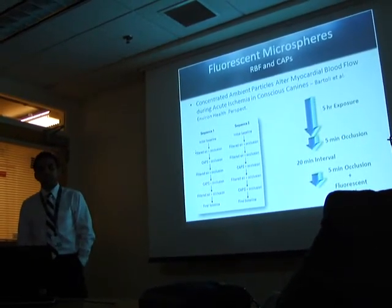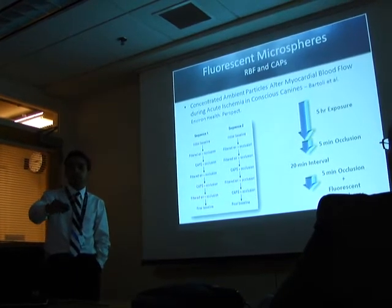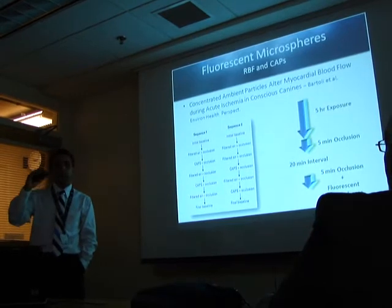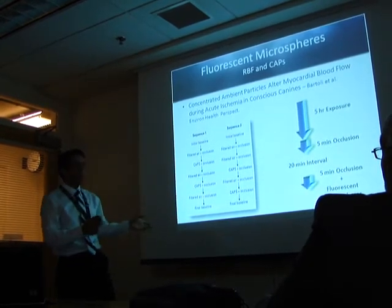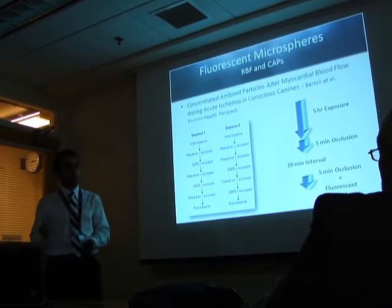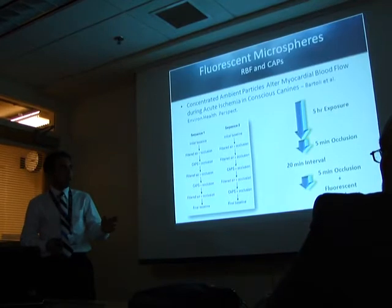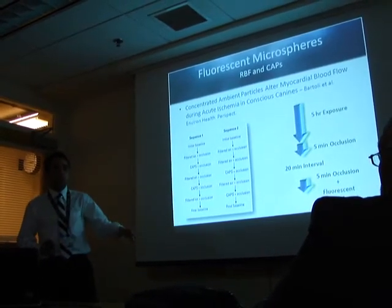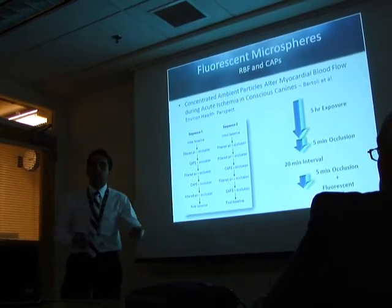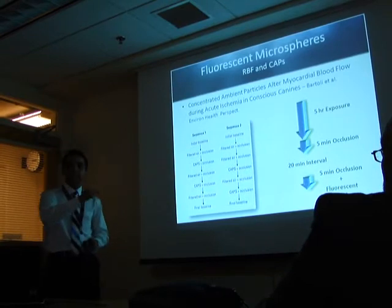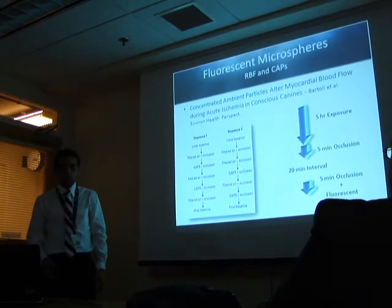An example of the utility of this technique has been shown by this group. After a CAPS exposure — this is a crossover design in which each animal receives different interventions in sequence, separated by at least one week — animals received either filtered air or CAPS exposure. They also had an implanted hydraulic system for occluding the left anterior descending artery. The design was five hours of exposure immediately followed by five minutes of occlusion, then an interval, and then a second five-minute occlusion. During the third minute of this second occlusion, the microspheres were injected — precisely the time at which regional blood flow is being assessed.